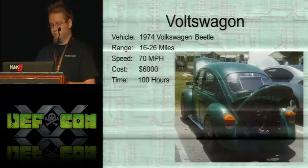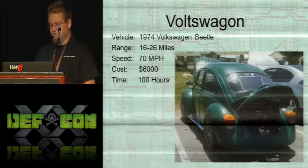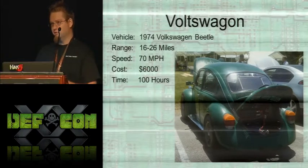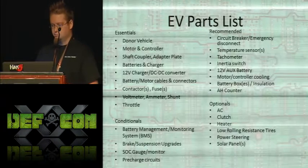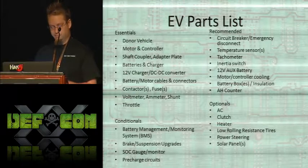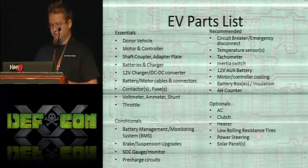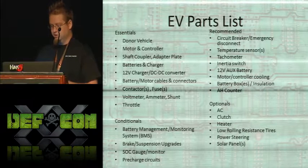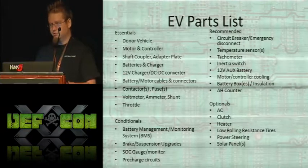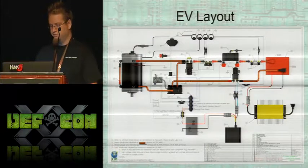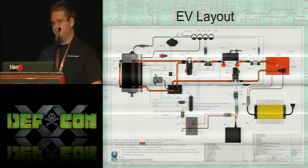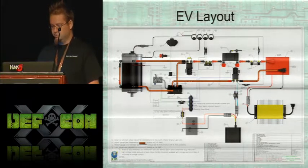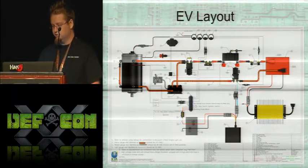This is my car — a 1974 Volkswagen Beetle. Range originally 16 to 26 miles, 70 miles per hour. Conversion cost: $6,000, and it took about 100 hours to get it on the road. I've probably spent at least 100 more hours on it since then working on other stuff. The big parts you need are the donor vehicle, the motor and controller, your shaft coupler and adapter plate, batteries, charger. Then you have contactors which are big relays, and a bunch of other little things. For the EV layout: you've got your traction battery pack which moves the vehicle, a 12-volt accessory battery, your motor, motor controller, throttle, and a bunch of fuses all over the place for safety, plus a charger.